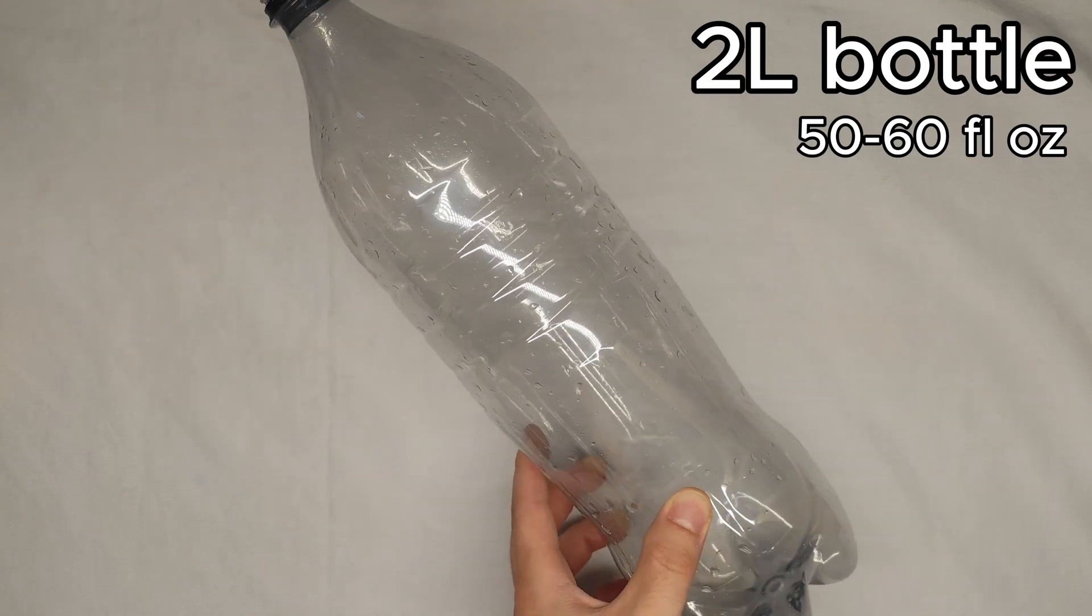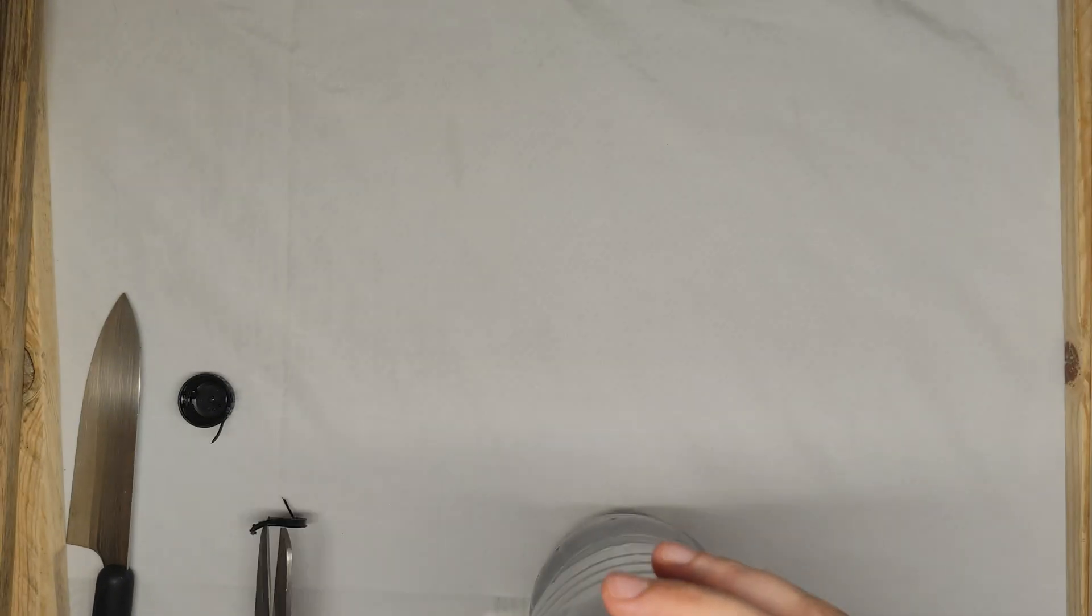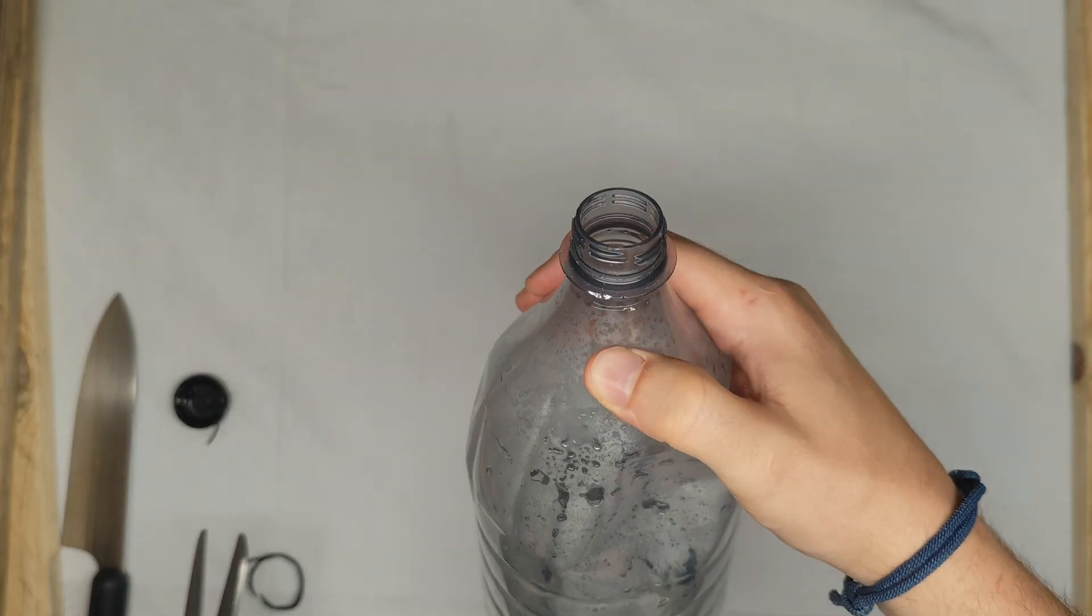Here's what you'll need. A 1.5 or 2 liter plastic bottle. First, remove the cap and the plastic ring around the neck. Just be careful not to cut the bottle itself.